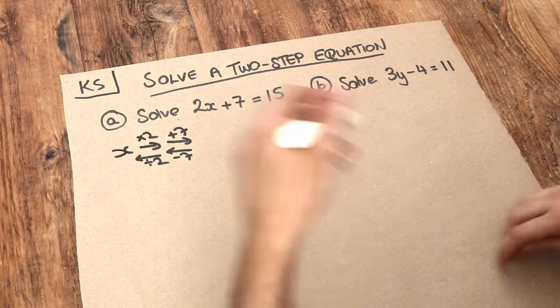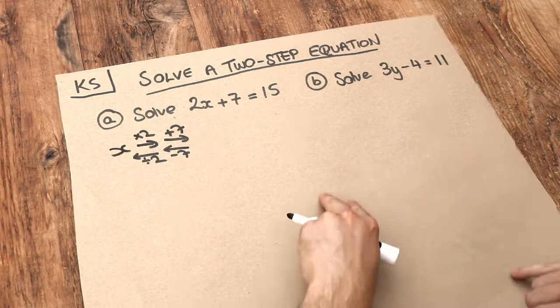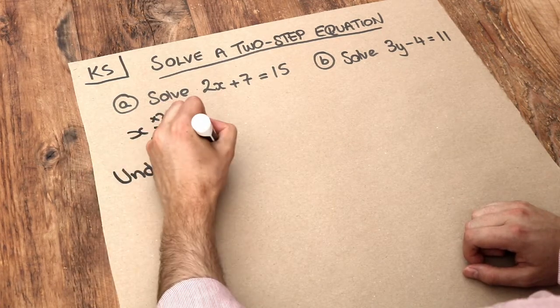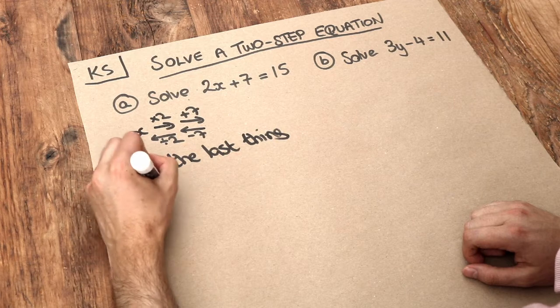You should think of it as undoing the last thing that happened to the variable. So that's the strategy: undo the last thing that happened to the variable.